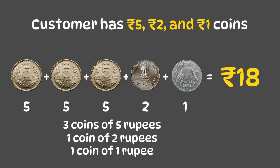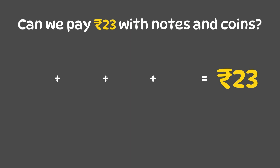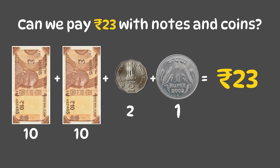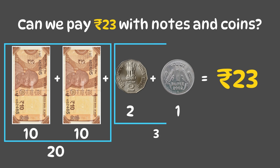Now let's try paying 23 rupees using notes and coins. We can use 2 ten-rupee notes to make 20, and 1 two-rupee coin and 1 one-rupee coin to make 3 rupees. So 20 plus 3 equals 23.